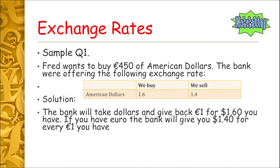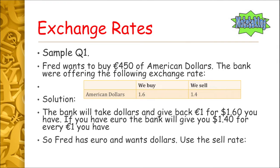In Fred's case, he has euros and wants dollars, so we use the sell rate, because the bank is selling him dollars. We take his 450 euro and multiply it by 1.4 — the sell rate — and we get a total of 630 dollars. Pause the video to make sure you fully grasp that. If you have any questions, ask below in the comments.